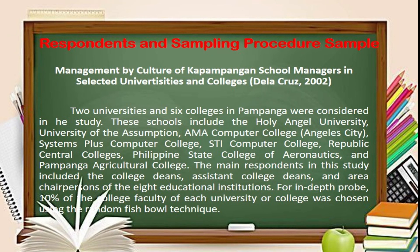Here is a sample respondents and sampling procedure from 'Management by Culture of Kapampangan School Managers in Selected Universities and Colleges' by De La Cruz, 2002. Two universities and six colleges in Pampanga were considered. The schools include Holy Angel University, University of the Assumption, AMA Computer College in Angeles City, Systems Plus Computer College, SDI Computer College, Republic Central Colleges, Philippine State College of Aeronautics, and Pampanga Agricultural College. The main respondents included the college deans, assistant college deans, and area chairpersons of the eight educational institutions. For in-depth probe, 10% of the college faculty of each university or college was chosen using the simple random fishbowl technique.